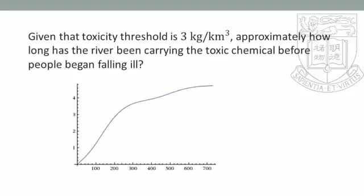Now, given that the toxicity threshold is 3 kilograms per cubic kilometer, approximately how long has the river been carrying the toxic chemical before people began falling ill? We can plot the curve using Wolfram Alpha. We find that the concentration reaches 3 kilograms per cubic kilometer when t is around 200. Therefore, the river has been carrying the toxic chemical for around 200 days before people began falling ill.